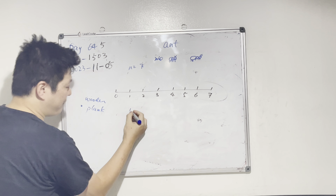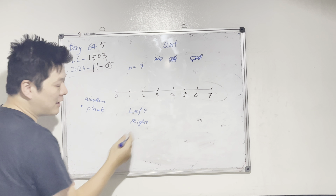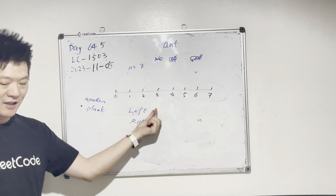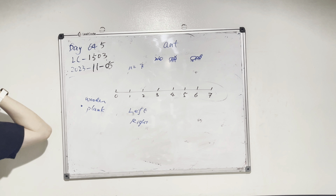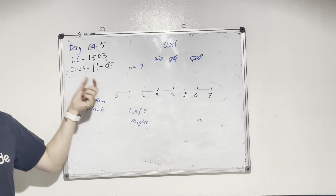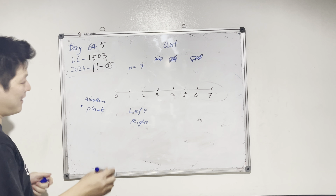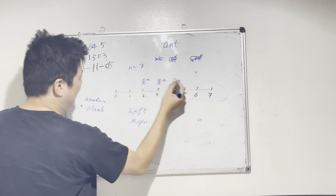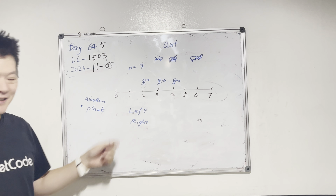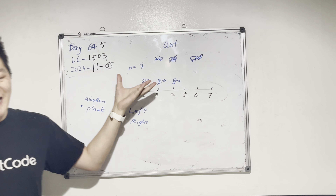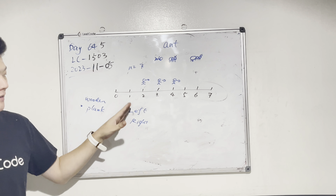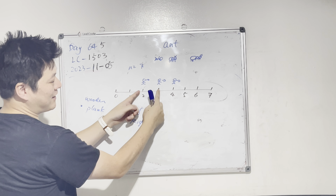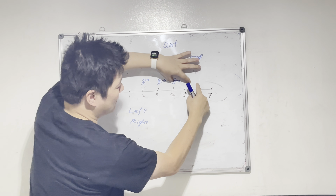We are given two arrays: one array called 'left' and one called 'right'. They represent the positions where the ants are placed. Positions in the left array mean those ants are facing left, and positions in the right array mean those ants are facing right. Their speed is one unit per second.